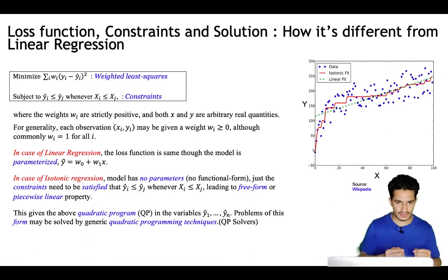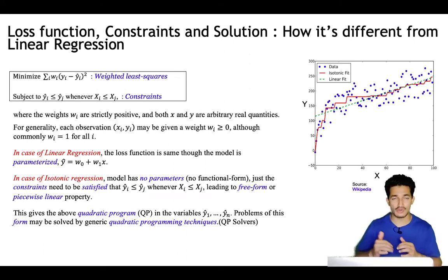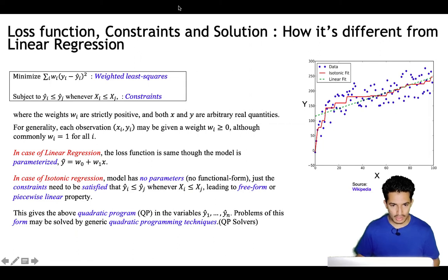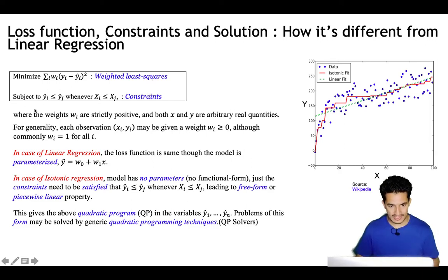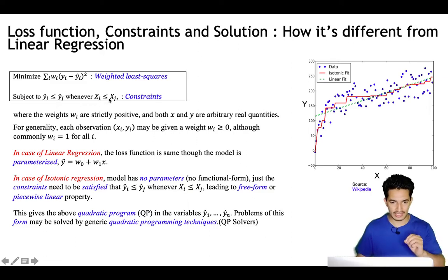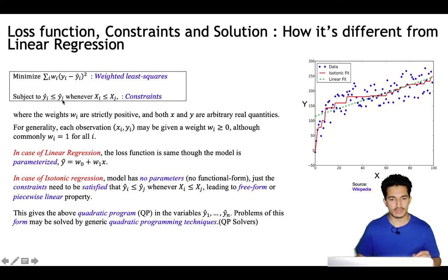Next we will look at what is the loss function of isotonic regression, what are the constraints, and how it's solved — and also how it's different from linear regression. The loss function of isotonic regression is weighted least squares, which is very similar to linear regression. The constraint says that whenever xi ≤ xj, the prediction ŷi should also be less than or equal to ŷj.